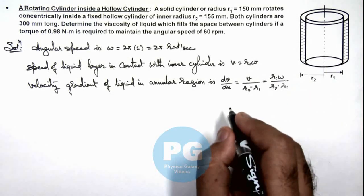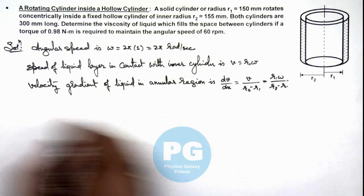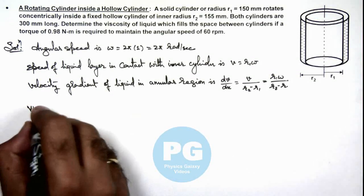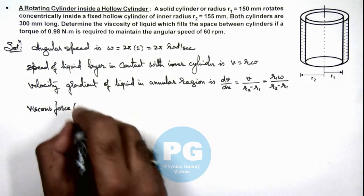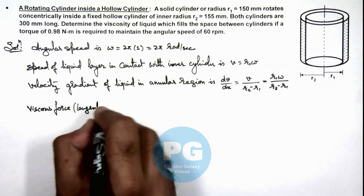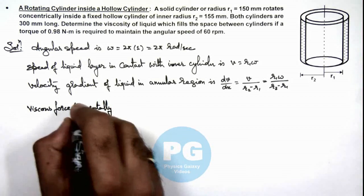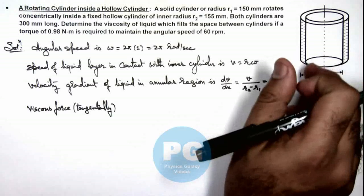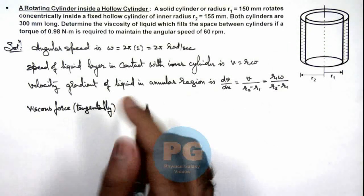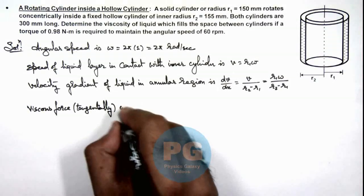This is the velocity gradient, and from this we can calculate the viscous force which is acting in tangential direction, because the cylinder is spinning and the viscous force is opposite to the motion on cylinder.